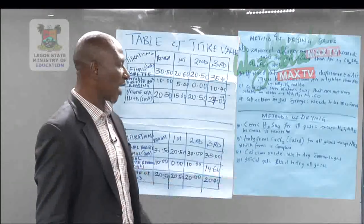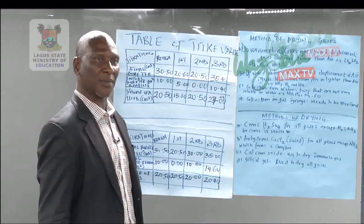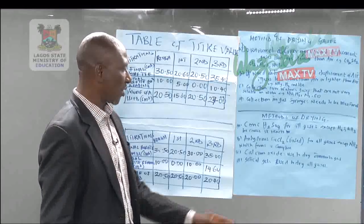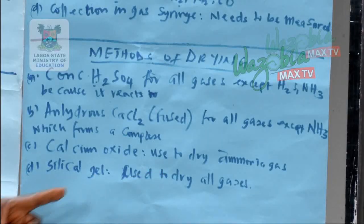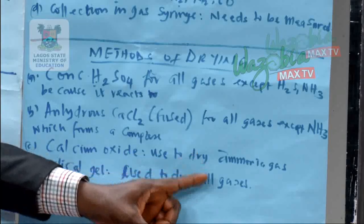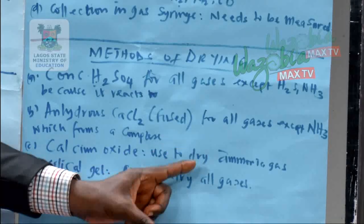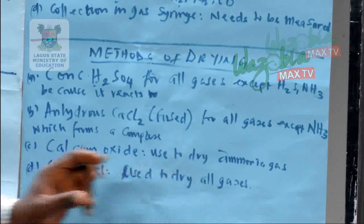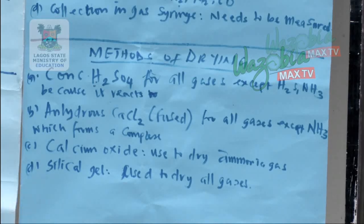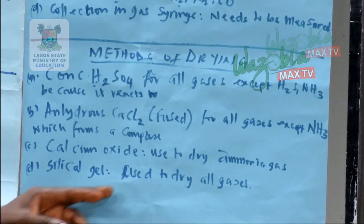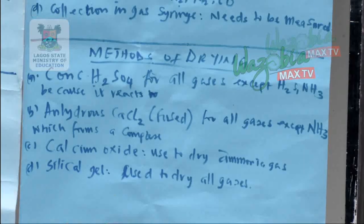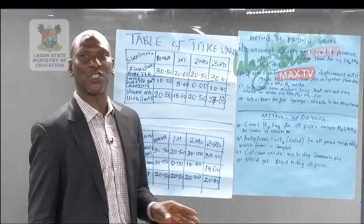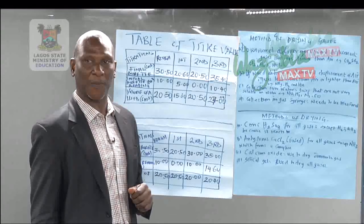Calcium oxide is another method of drying gases. It is used to dry ammonia and other gases, but it cannot dry ammonia gas on its own at all times. Then silica gel is used to dry all gases — either ammonia gas or any other gases that we need to dry after collection.